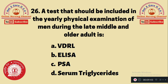Question 26: A test that should be included in the early physical examination of men during late middle and older adult age is — A. VDRL, B. ELISA, C. PSA (prostate-specific antigen), D. Serum triglyceride. The test to be included is option C — prostate-specific antigen, to detect whether prostate cancer is present.